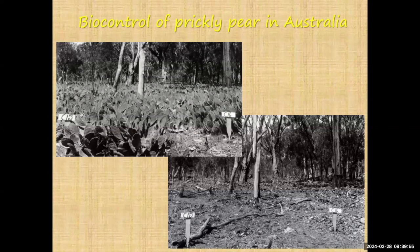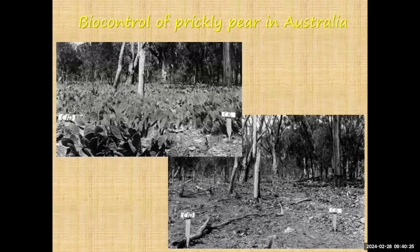A really good success story is biocontrol of prickly pear in Australia. By around 1920, prickly pear had really devastated the system, as you can see in the before photo. Several biocontrols were introduced, but one that was really effective was a moth species, Cactoblastis cactorum. It pretty much devastated this outbreak, which was all over Australia, in about five years' time. These are before and after photos of the same site — you can see how powerful this tool was.